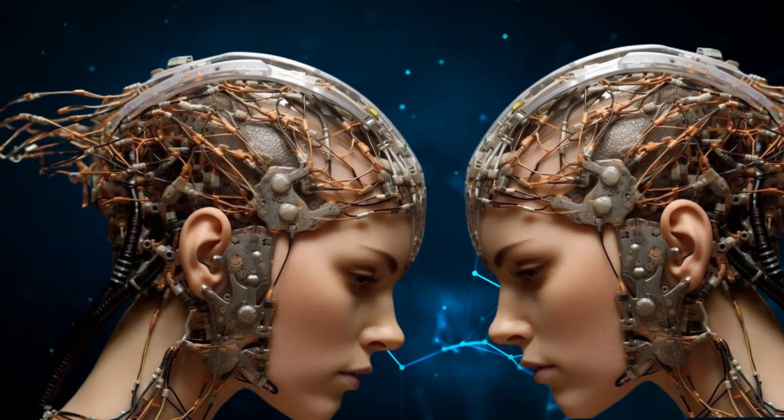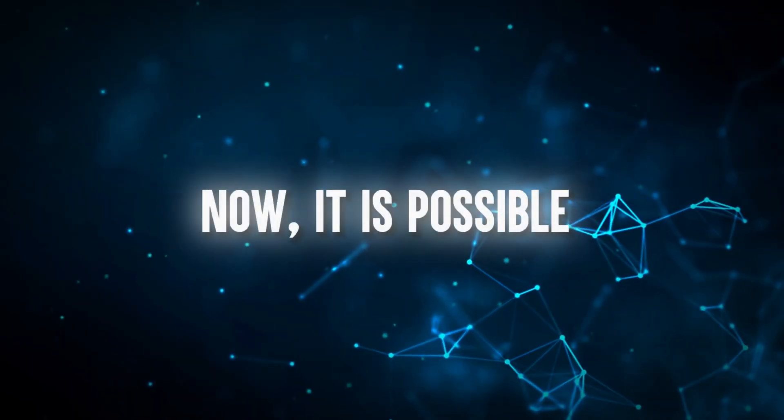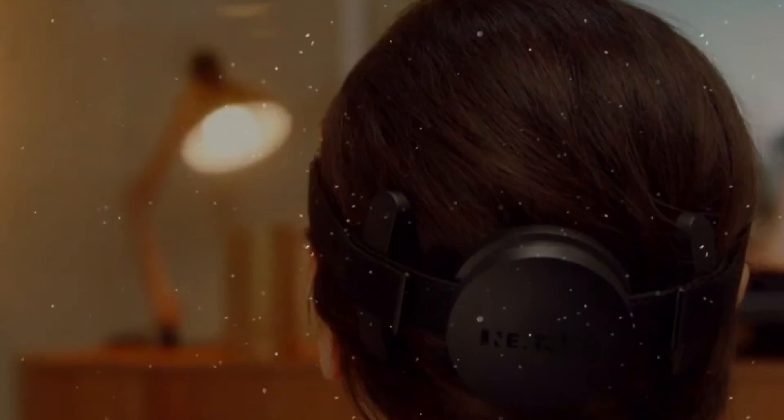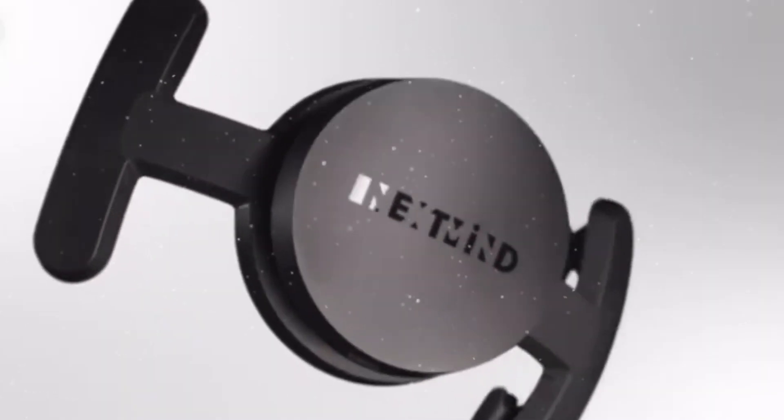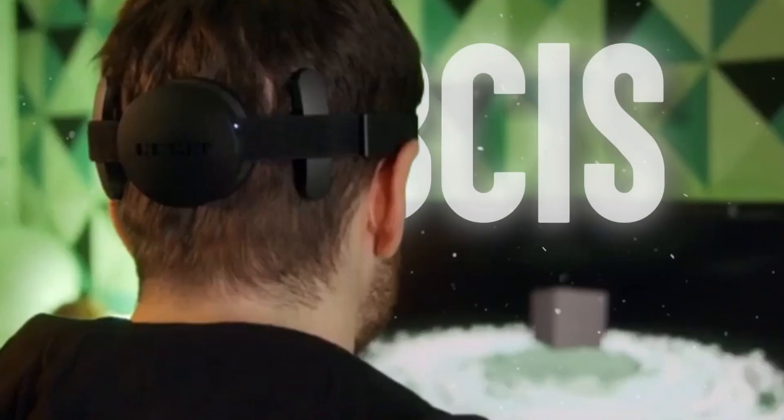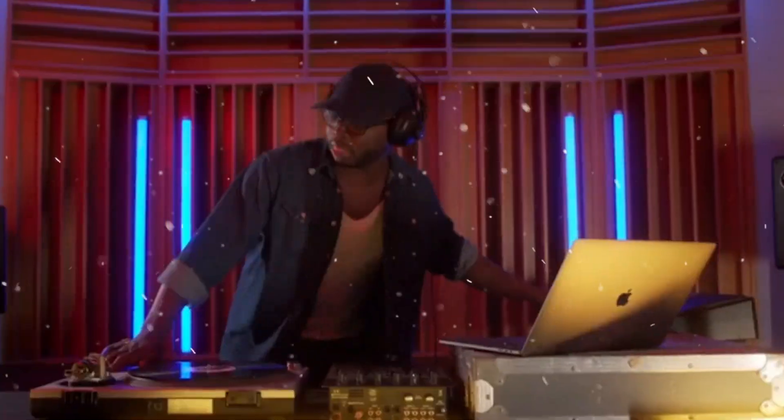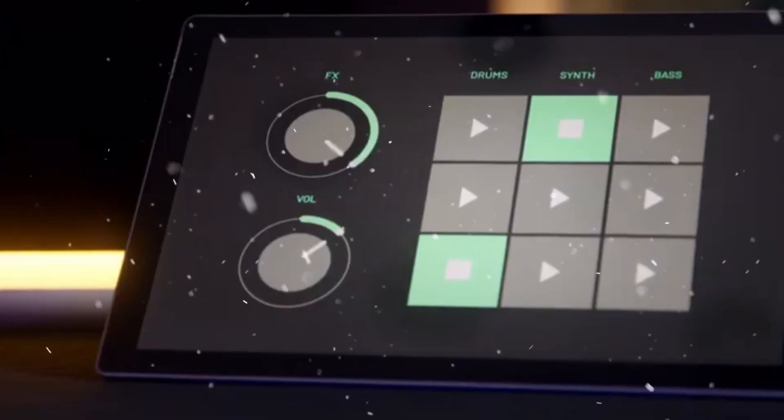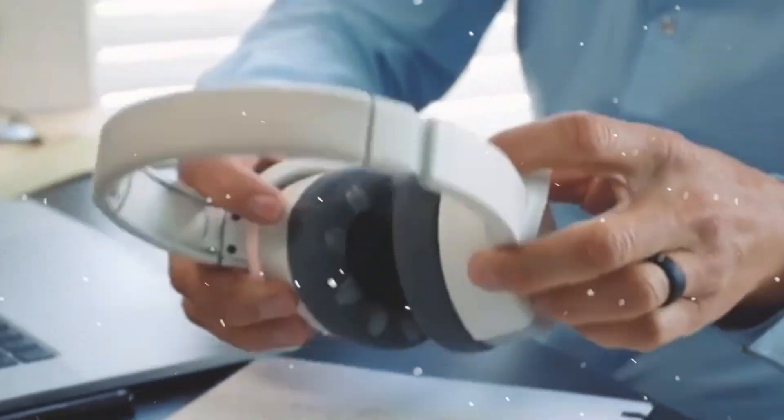Brain-computer interfaces for direct control. Ever thought about moving objects with your mind? Now it is possible to change things around you just by thinking about it. It might sound like something out of a sci-fi movie, but it's actually becoming real with brain-computer interfaces. For people who can't move around easily, BCIs are like a superpower, letting them control things using only their thoughts. It's like your mind becomes a magic wand making things happen that you never thought possible.